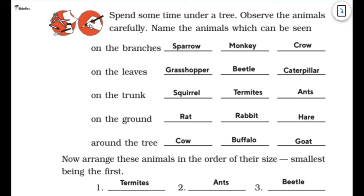So on the branches we can have sparrow, I can have monkey and crow. On leaves we can have grasshopper, petal and caterpillar. On trunk we can have squirrel, termites and ants. On the ground I can have rat, rabbit and hare. Around the tree we can have cow, buffalo and goat.